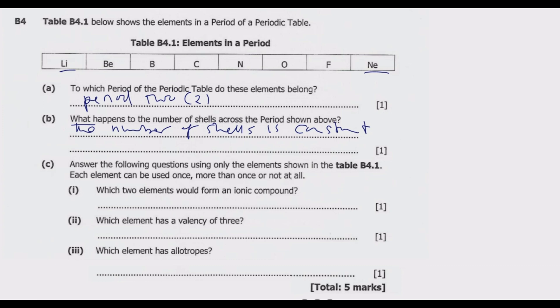Part C(i): which two elements would form an ionic compound? So ionic compound is a bonding between a non-metal and a metal. Remember, we have three types of bonding: covalent bonding, which is between non-metals by sharing electrons; ionic, which is between a non-metal and a metal; and metallic, which is between metals.